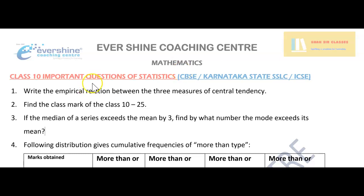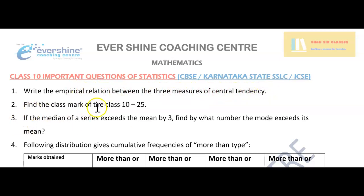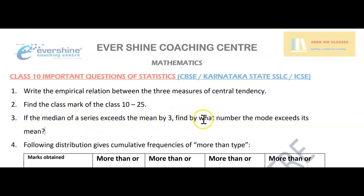Here are the class 10 important questions from the chapter Statistics. Question 1: Write the empirical relationship between the three measures of central tendency. Question 2: Find the class mark of the class 10 to 25. Question 3: If the median of a series exceeds the mean by 3, find by what number the mode exceeds the mean.